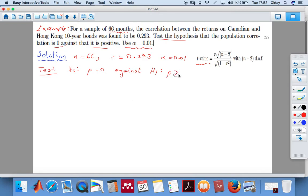Let me explain this in Turkish. The formula we'll use, which will be given to you on the formula sheet in the exam, is the t-value with n minus 2 degrees of freedom. We need r times square root of n minus 2 over square root of 1 minus r squared. Our n value is 66 months and our correlation is 0.293. Alpha is 0.01, meaning 1%. It says test the hypothesis - we write the null hypothesis that population correlation is zero against that it's positive.